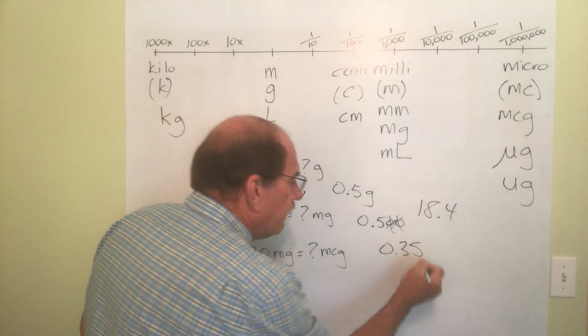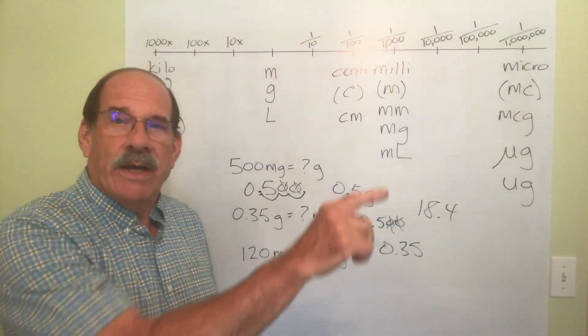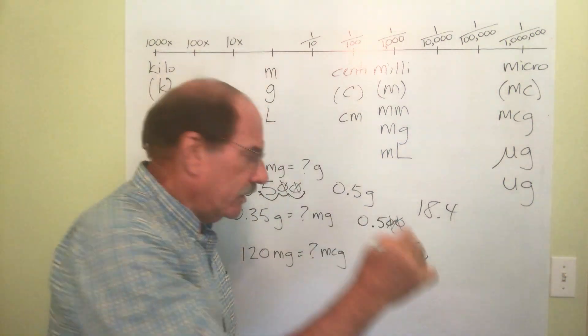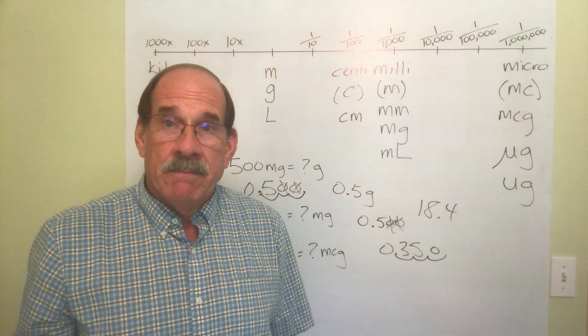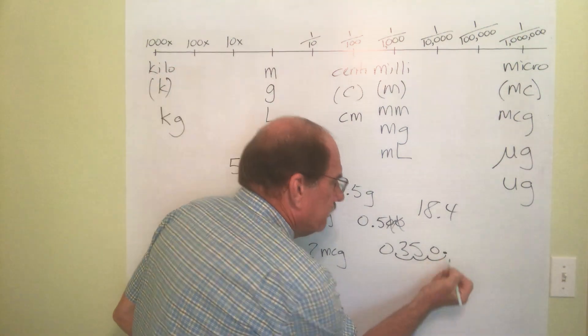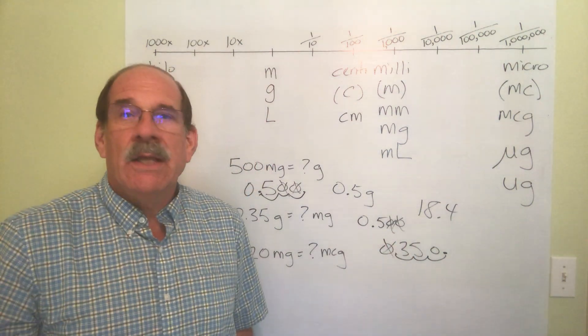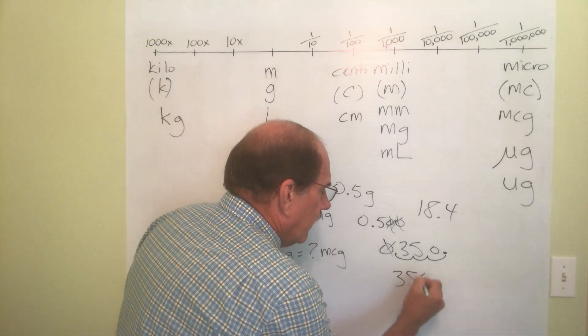So I start out with my 0.35, I move to the right. I move the dot three places to the right. I go one, two, but I need another little jump, so you put a zero to take up the space, and the dot ends up right there.